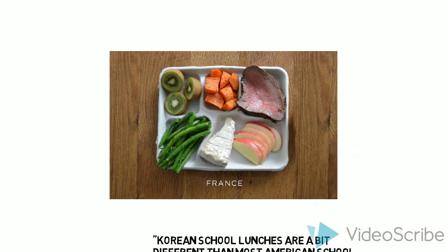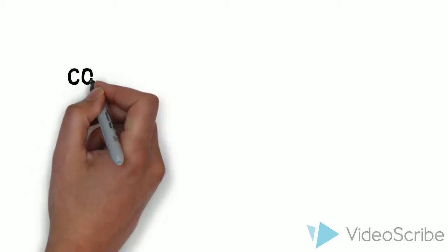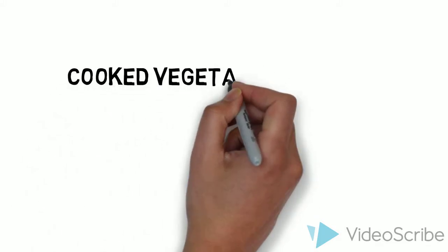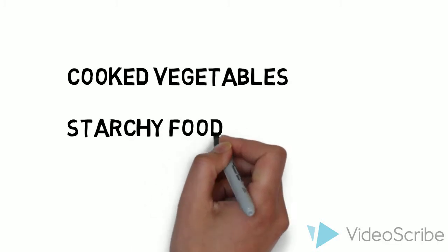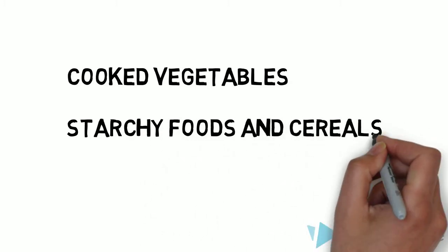The nutritional standards regulate how frequently dishes are served in a 20-meal cycle. For example, at least 10 meals in the cycle must be accompanied by cooked vegetables, 10 meals with starchy foods or cereals, and 8 meals with a fresh fruit dessert.